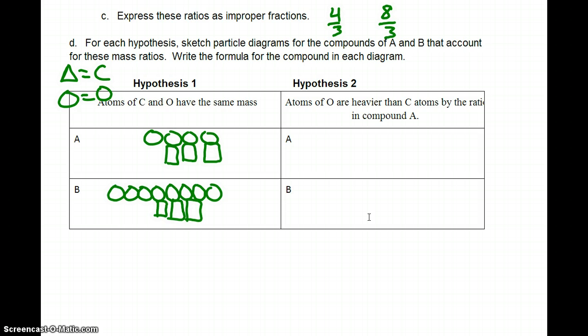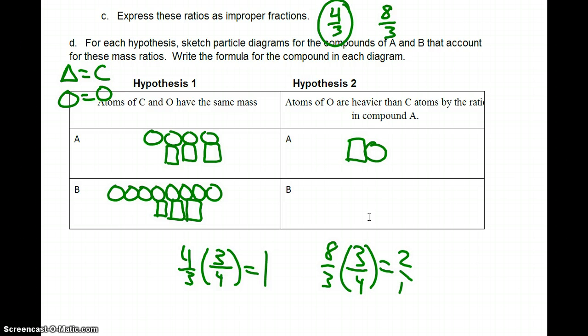And then it says, atoms of O are heavier than carbon atoms by the ratio in compound A. So what that says is that it's really 4 thirds times 3 fourths, and that's a 1 to 1 ratio then. So I would get that. And then again, it's compound A. So, again, that's the inverse of this value. So I would have 8 thirds times 3 fourths is going to give me a 2 to 1 ratio. So in other words, I have 1 carbon for every 2 oxygen.